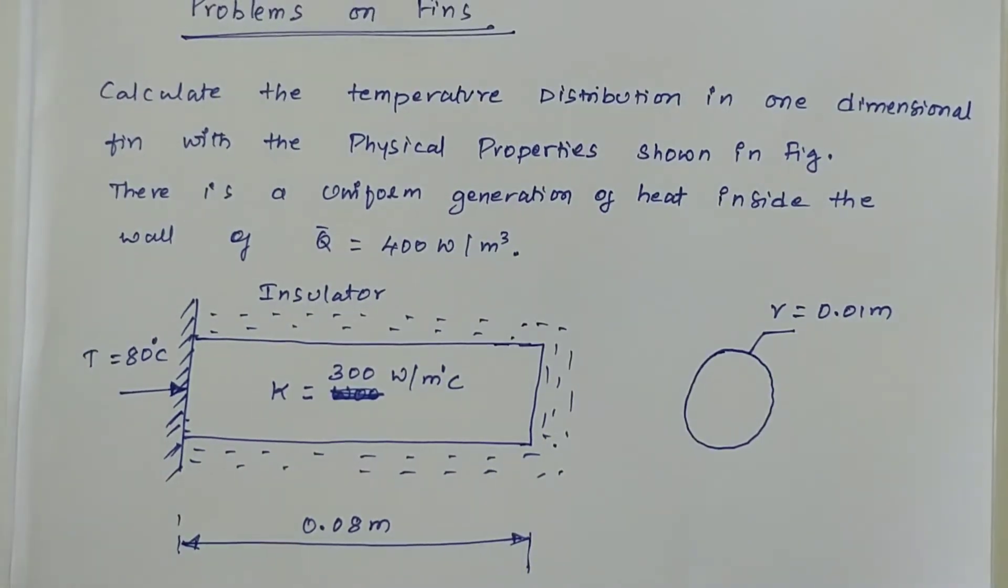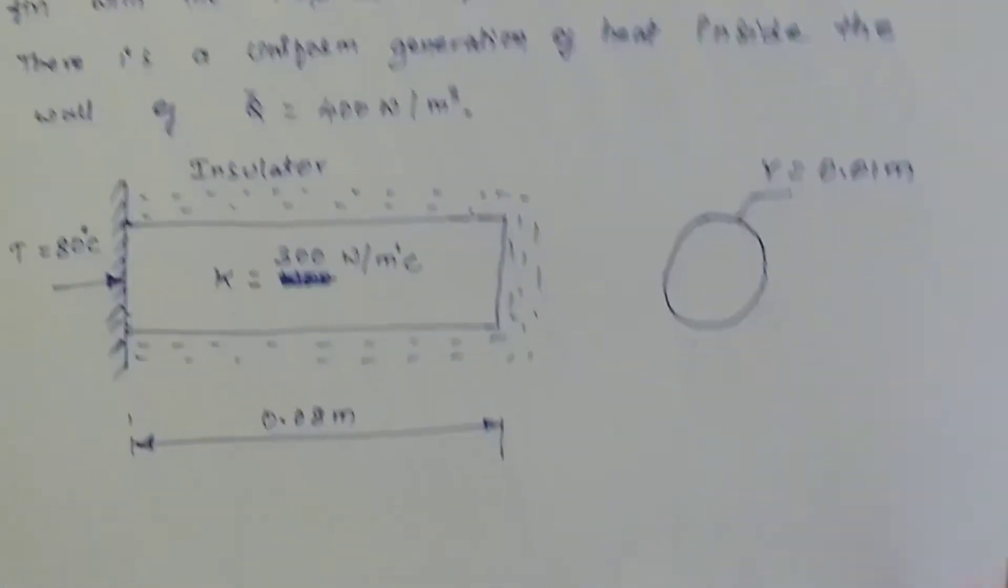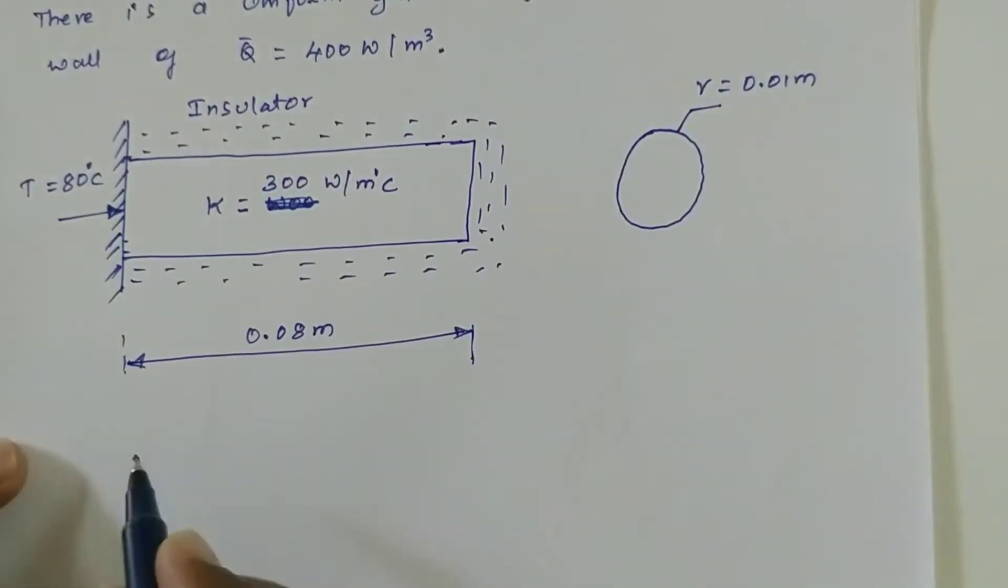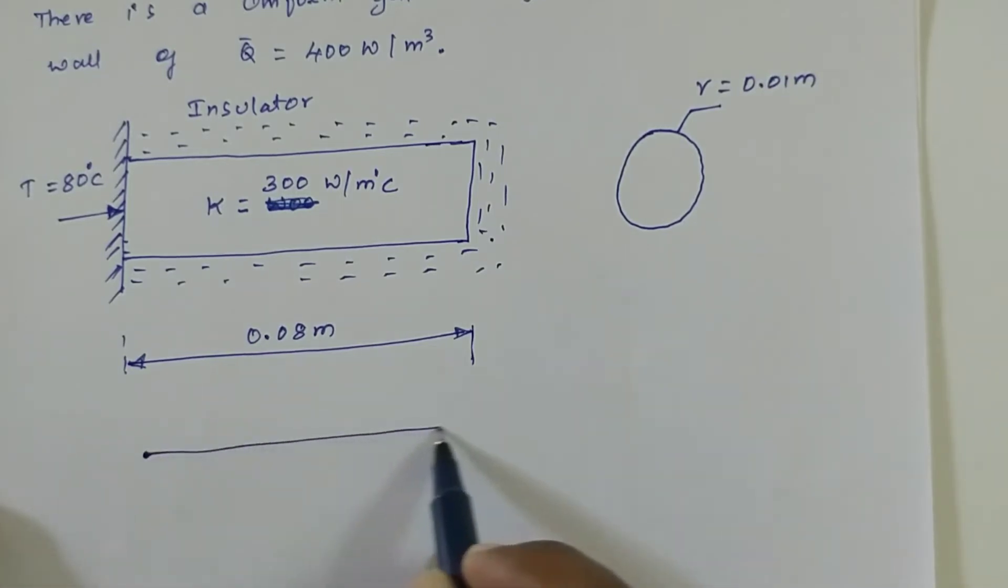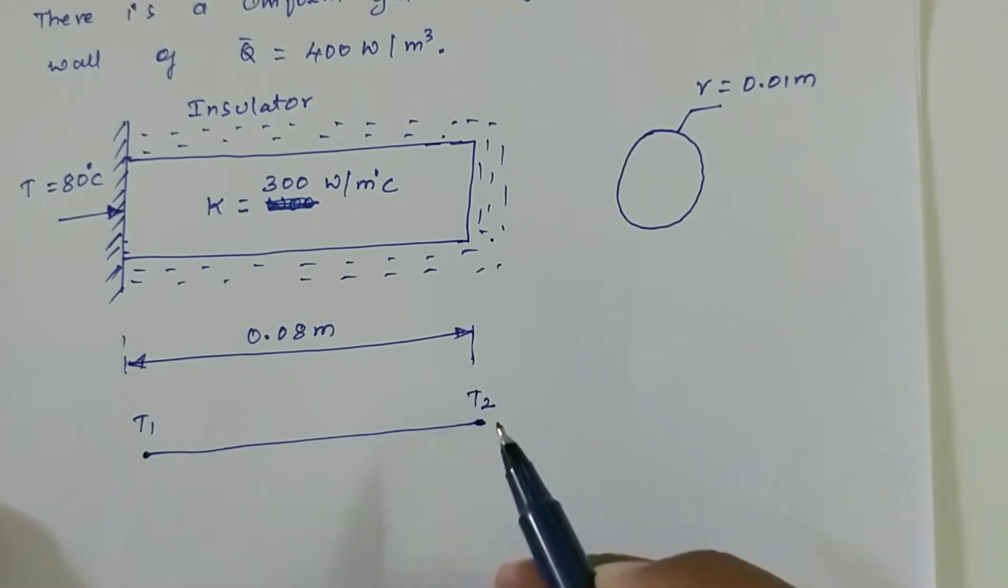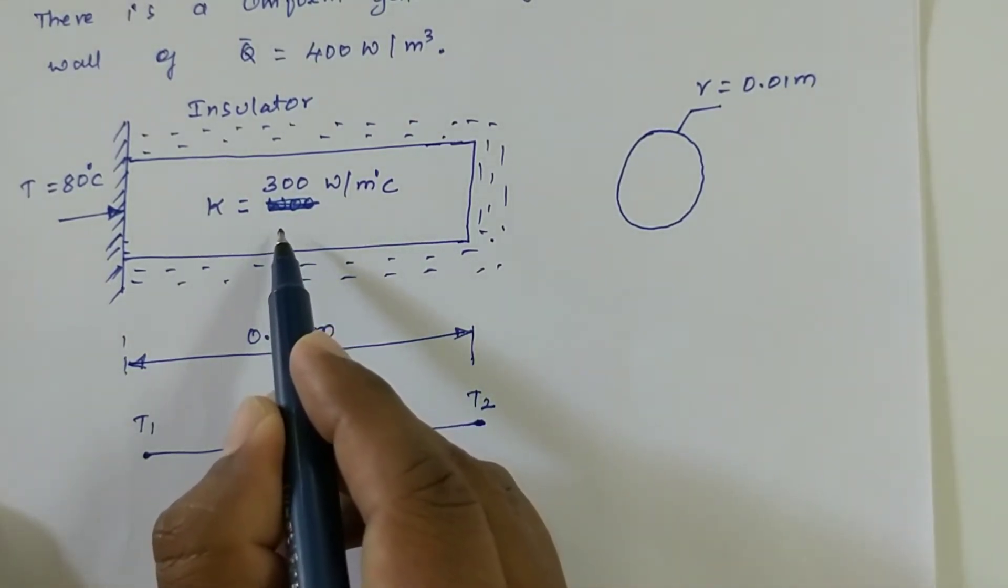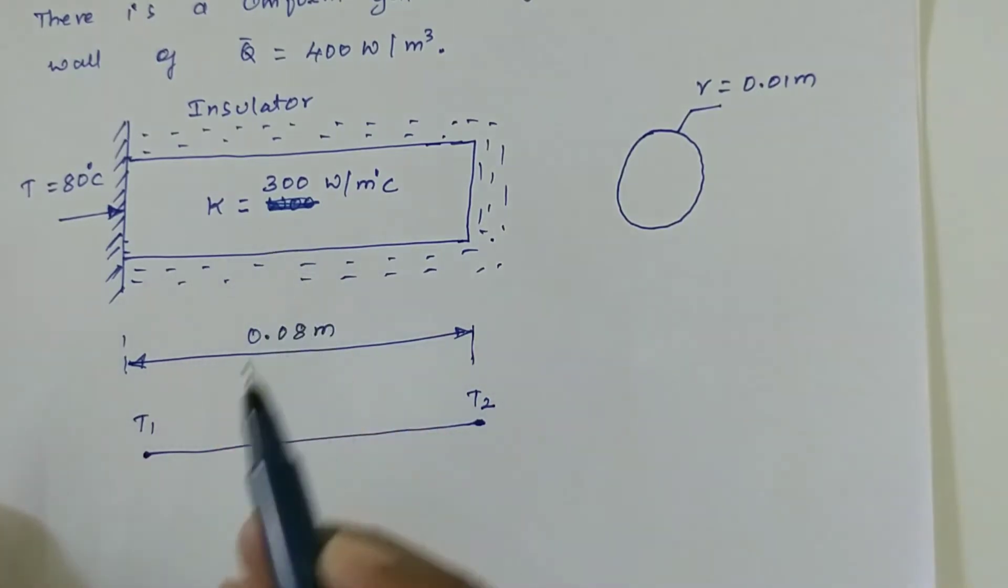Let us write the finite element formulation for this particular problem. The finite element formulation for this problem can be written like this. We have two nodes, this is T1, this is T2. This entire fin can be considered as one element, made up of one element.